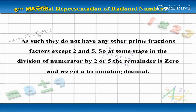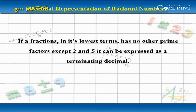So at some stage in the division of a numerator by 2 or 5, the remainder is 0 and we get a terminating decimal. If a fraction in its lowest terms has no other prime factors except 2 and 5, it can be expressed as a terminating decimal.